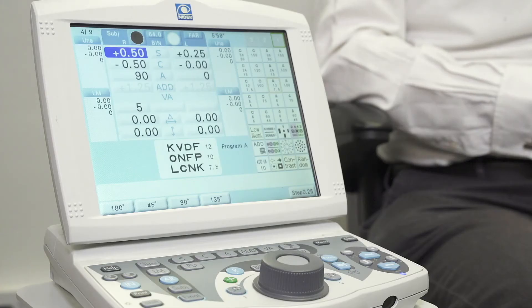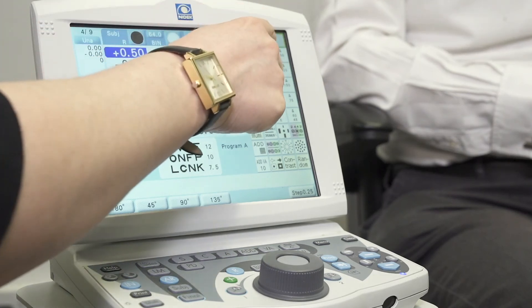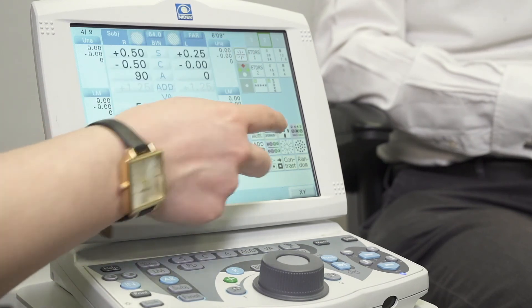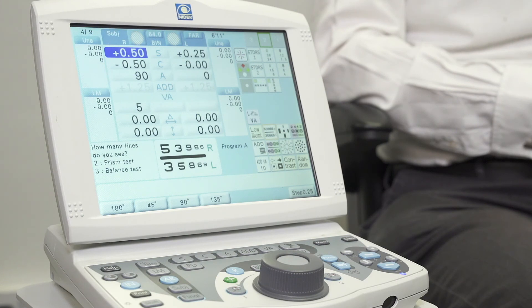Once we have a finalized distance prescription for both eyes, we can move on to our binocularity testing, and that may be our fixation disparity or it may be binocular balancing by using the binocular balance function here.